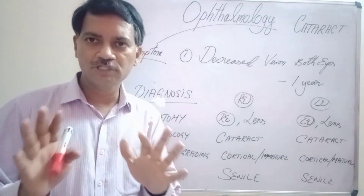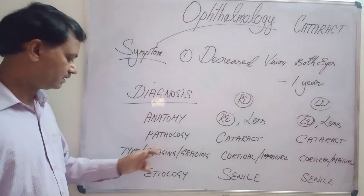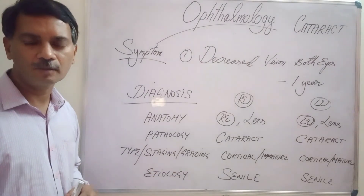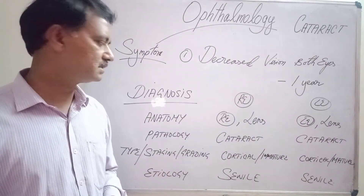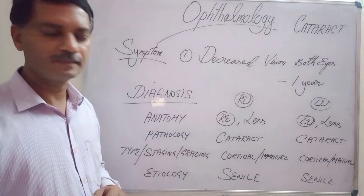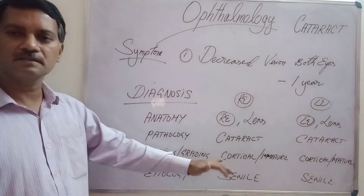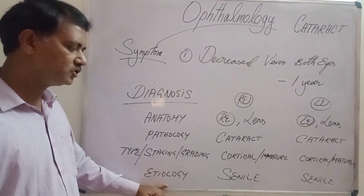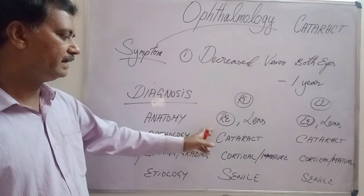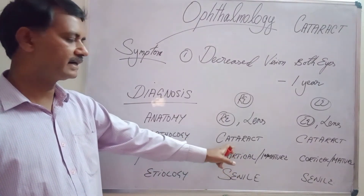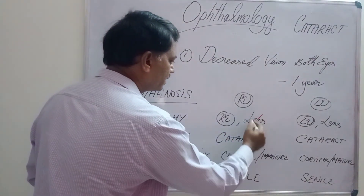Now I want to make the diagnosis. As I have already told, diagnosis should have four components: anatomical, pathological, type, staging or grading, and etiological. In the right eye, the part affected is the lens. The pathology is cataract. The type of cataract is cortical cataract because it was greyish-white in colour, and the staging is immature type. The etiology is aging, i.e., senility. So the right eye diagnosis is right eye senile immature cortical cataract. Since cataract occurs only in the lens, we need not include the anatomical part in the diagnosis.